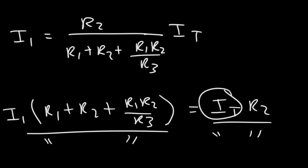So that's how you can calculate the current in a resistor where you have three resistors connected in parallel given the total current entering that circuit.